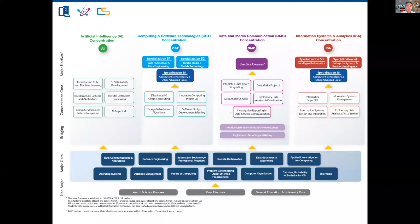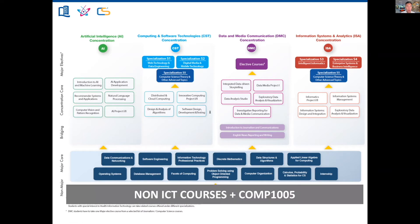This picture shows the curriculum structure. It's read from the bottom to the top. In year one, students take a number of science courses including computer science, and other non-ICT courses such as languages and courses related to university life. In year two, there are foundation courses: operating systems, networking, software engineering, databases, mathematics, programming, data structures, and algorithms.